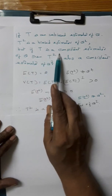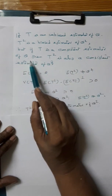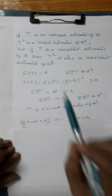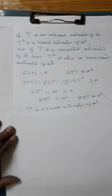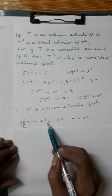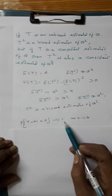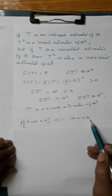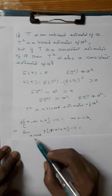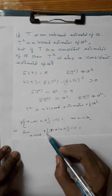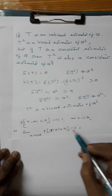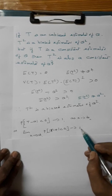If T is a consistent estimator of theta, then T squared is a consistent estimator of theta squared. We know that the probability of |T minus theta| less than epsilon tends to 1 as n tends to infinity. Or we can write this as: limit as n tends to infinity of the probability of |T minus theta| less than epsilon equals 1.